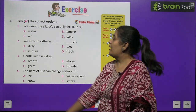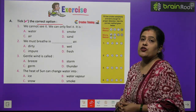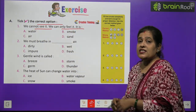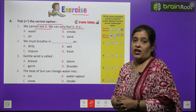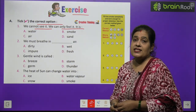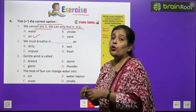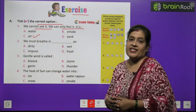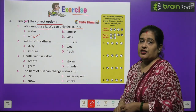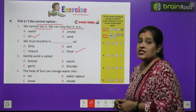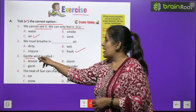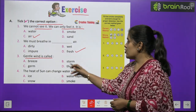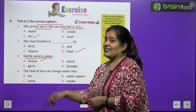Now time to do some exercises. Number one — tick the correct option. We cannot see it, we can only feel it. It is: water, air, smoke or sand? Correct answer: air. Number two — we must breathe in blank air: dirty, impure, wet or fresh? Correct answer: fresh. Number three — gentle wind is called: breeze, storm or thunder? Correct answer: breeze. Number four you will do by yourself.